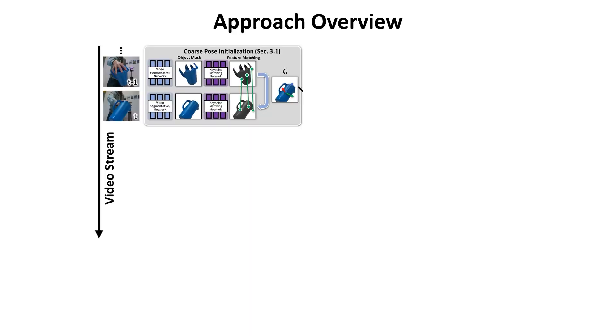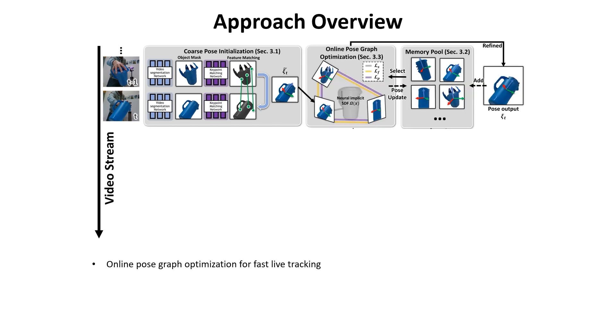BundleSDF first performs coarse-pose initialization by registering the latest frame against its previous neighboring frame. To refine the pose, an online pose graph is performed by selecting a subset of frames from the memory pool. The refined pose becomes the output tracked pose. We also add the frame to the memory pool if the pose is from a novel view.